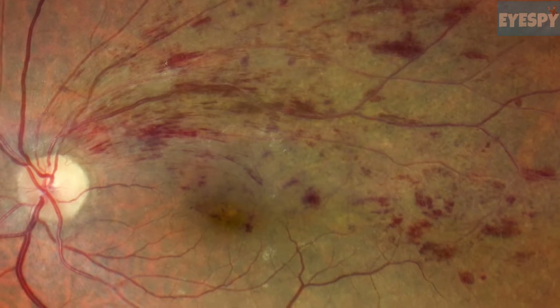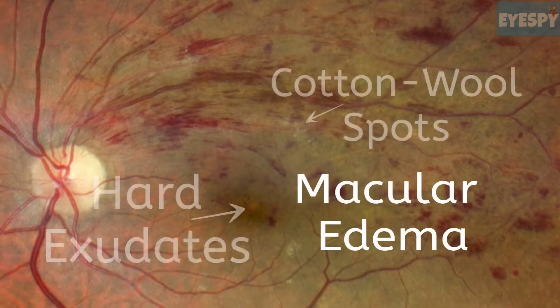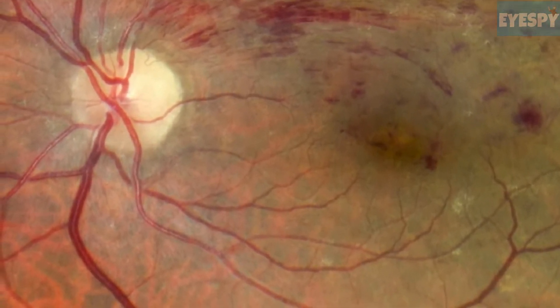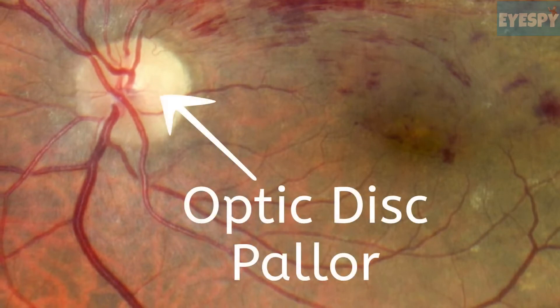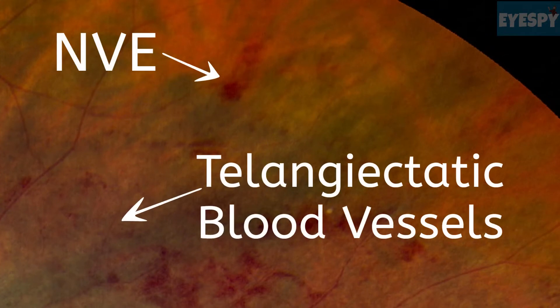Flame-shaped hemorrhages are seen in the retinal nerve fiber layer, while dot and blot hemorrhages are seen in the deeper layers of the retina. Macular edema is due to intra- and subretinal fluid accumulation. Cotton wool spots are due to axoplasmic stasis, while hard exudates are due to lipid exudation from ischemia. In the periphery, telangiectatic blood vessels are present.